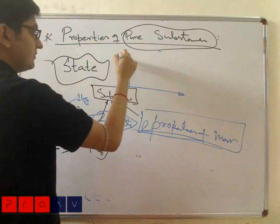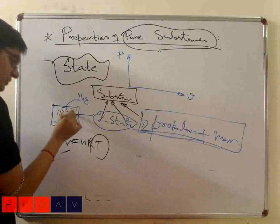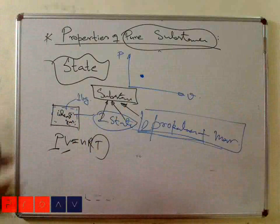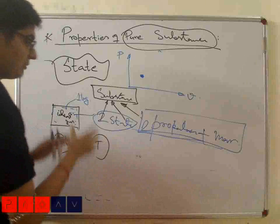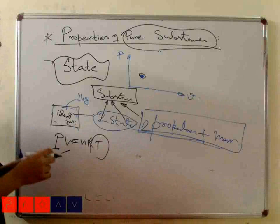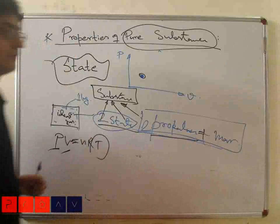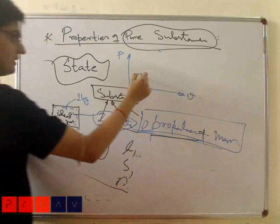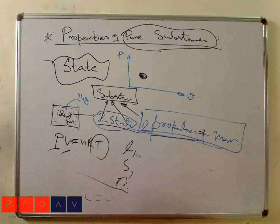By these two properties, you can represent this substance in any thermodynamic plane. For example, P on one axis and V on another axis — this is one thermodynamic plane. You can define the state of the system uniquely in this plane. For any substance, by some number of properties, you can uniquely define it into a particular state and perform thermodynamic analysis. For ideal gas, you require two properties plus mass of the gas to define entropy, enthalpy, density, and all other things.